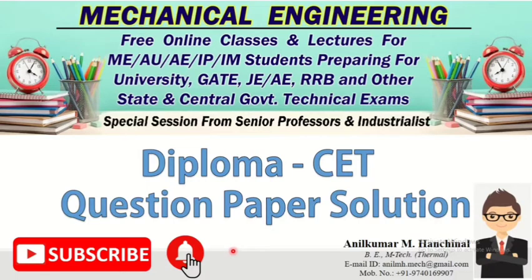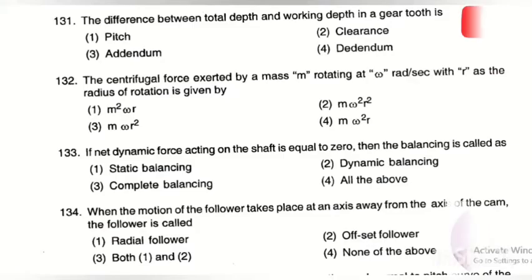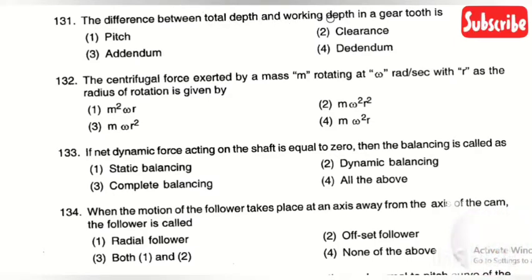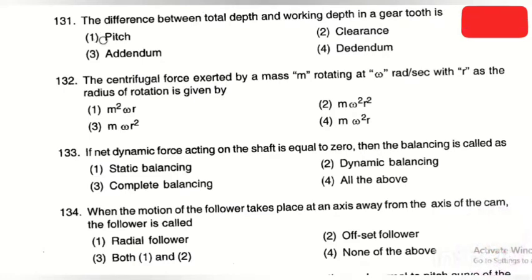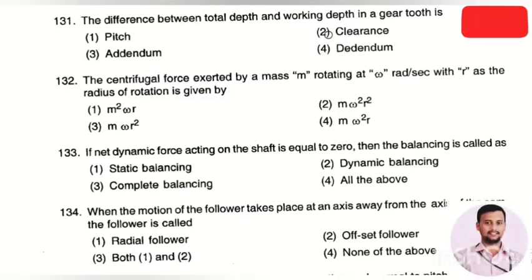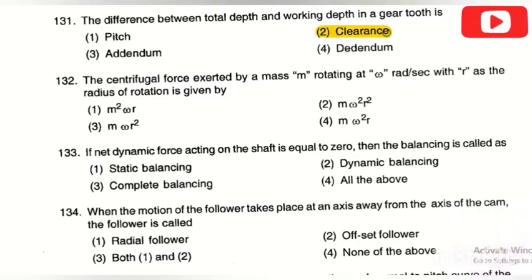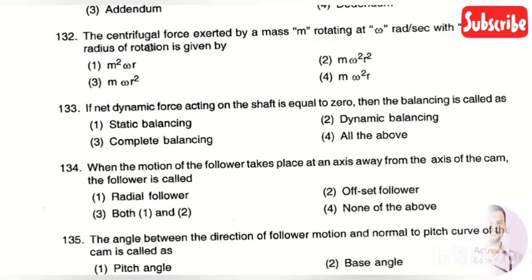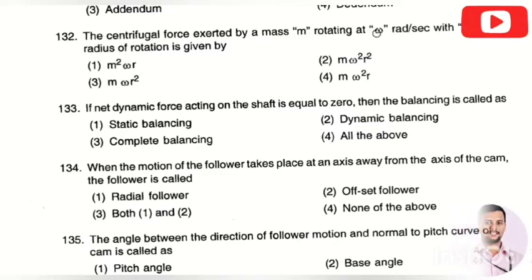The first question: the difference between the total depth and the working depth in a gear tooth is — option 1: pitch, option 2: clearance, option 3: addendum, option 4: addendum. The right answer is option 2, that is clearance.